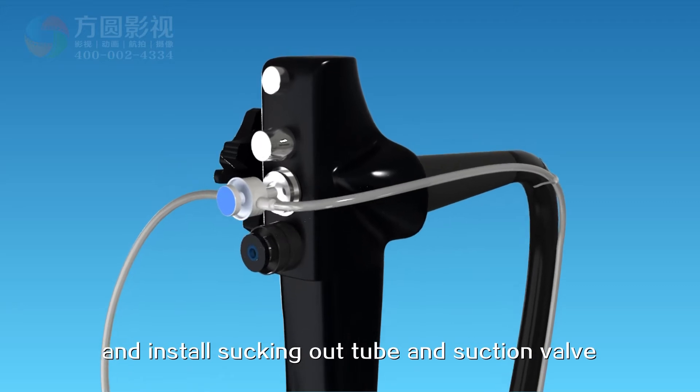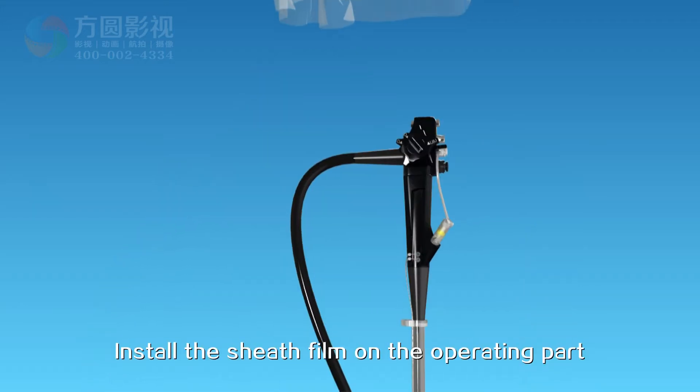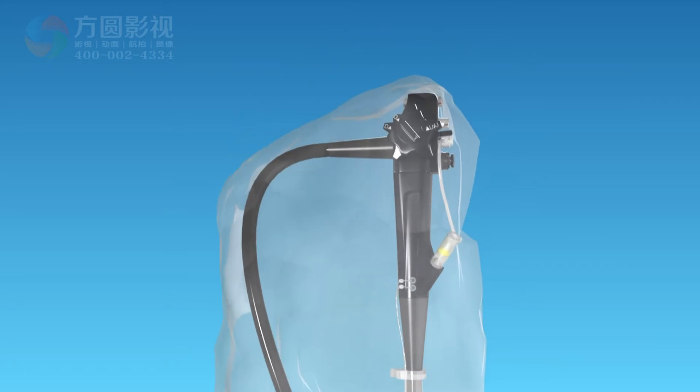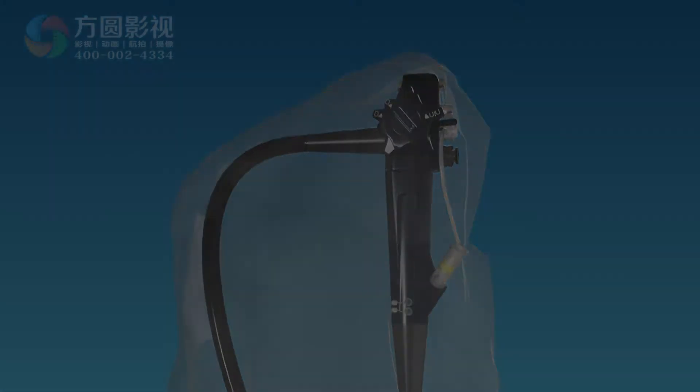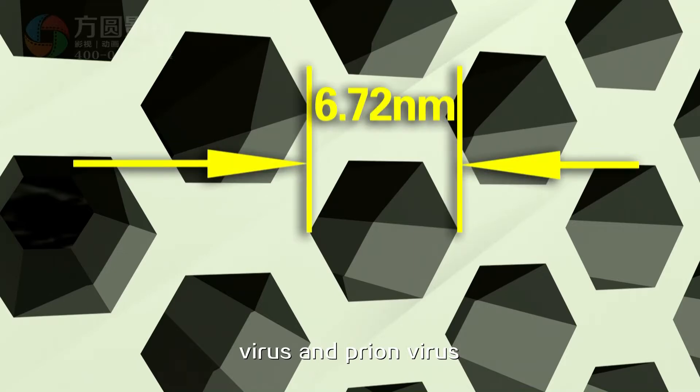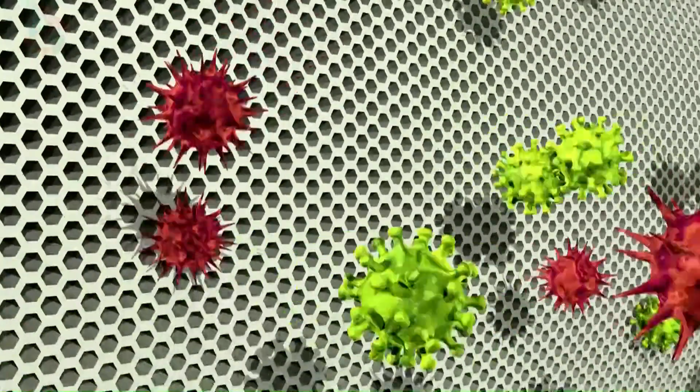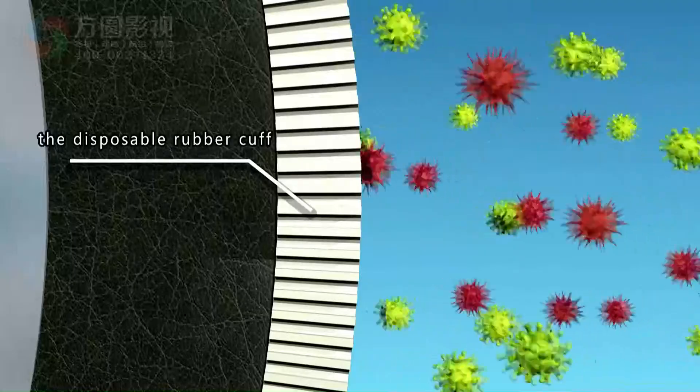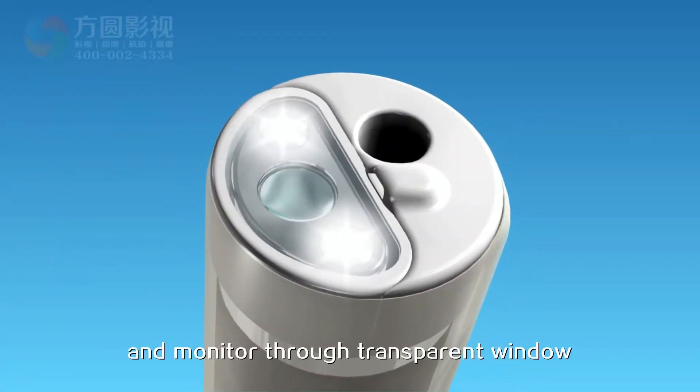Install the sucking out tube and suction valve. Install the sheath film on the operating part of the lens body. The disposable rubber cuff can separate various bacteria, viruses, and prion virus, and the endoscopy can have light and monitor through the transparent window.